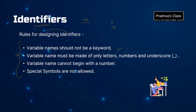For that you should be clear with the rules for designing an identifier. The first rule: the variable name should not be a keyword. The second rule: the variable name must be designed with letters, numbers, or underscore. Underscore is allowed as the first character, but a number is not allowed as a first character — you cannot start a variable name with a number.